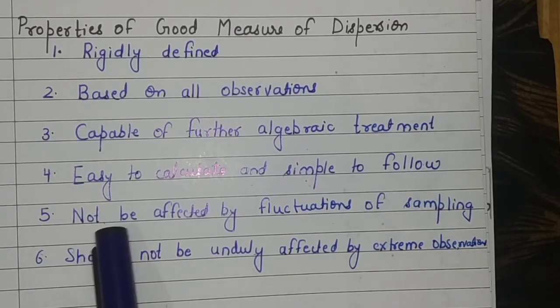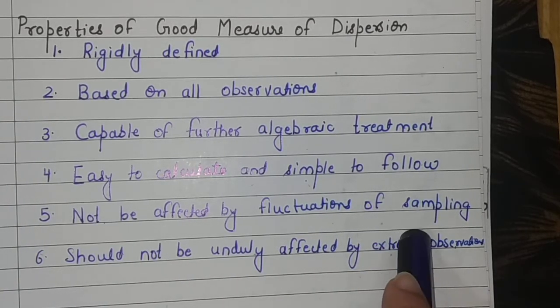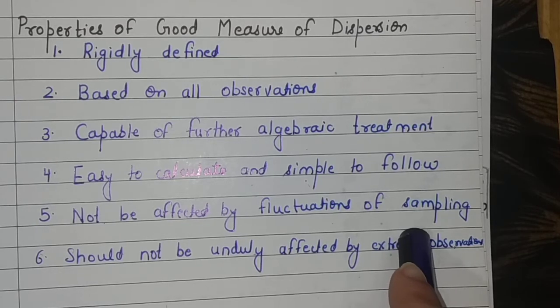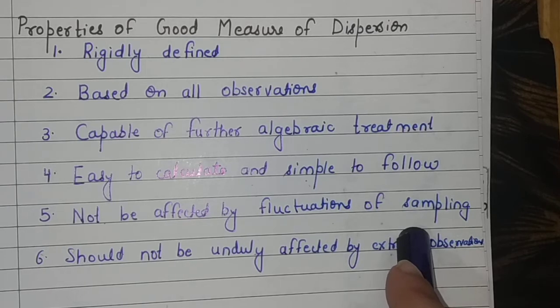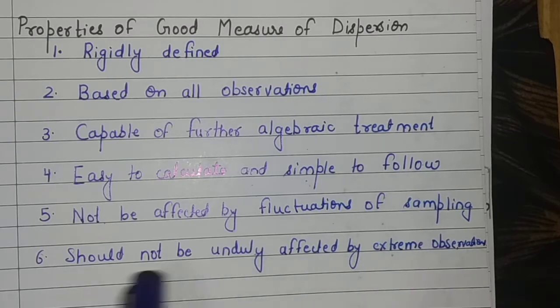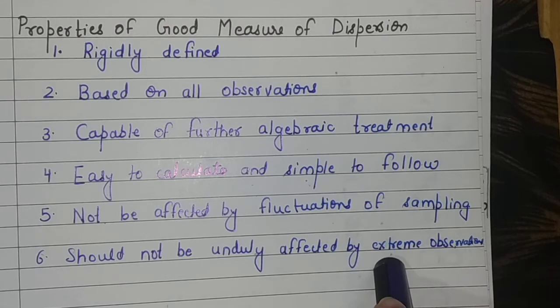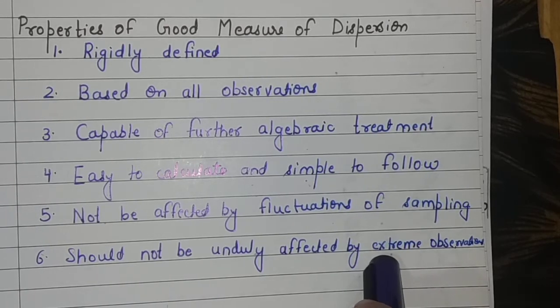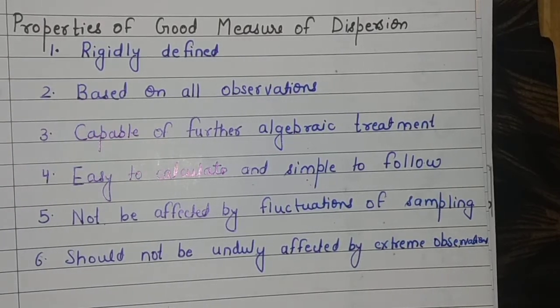Number five, your measure of dispersion is good when it is not affected by fluctuations in sampling. Whether you take sample A first, then reject it and take a new sample B, your answer should be approximately the same - it should not be majorly affected by the fluctuations in sampling. Number six, if there are extreme observations in your data, if these extreme observations affect your measures of dispersion, then your measure is not good. So it should not be affected by the extreme observations.